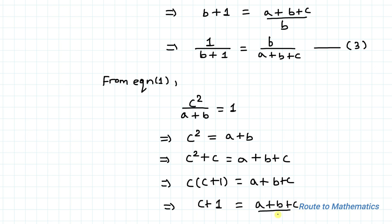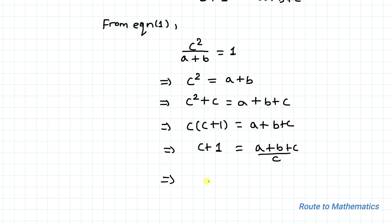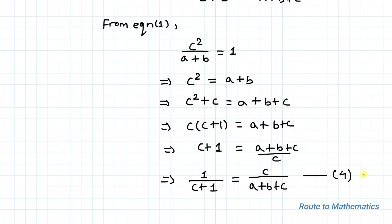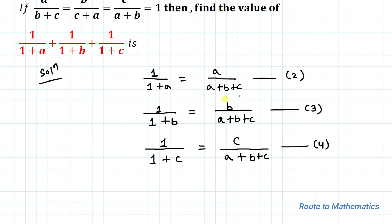This implies, by taking the reciprocal of both sides, we have 1 divided by (c+1) equals c divided by (a+b+c). Let's take this as equation 4. So we have found equations 2, 3, and 4.